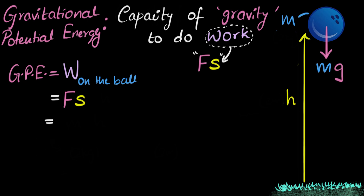All right, we'll get force which is the weight mg times displacement which is the height. And so this is the gravitational potential energy of the ball. It's m times g times h.